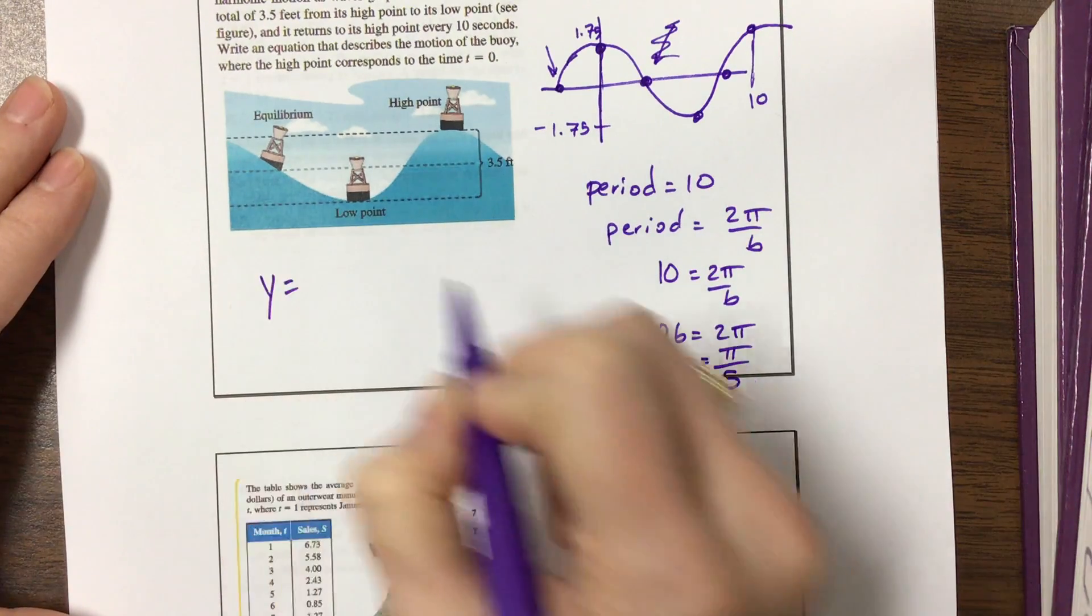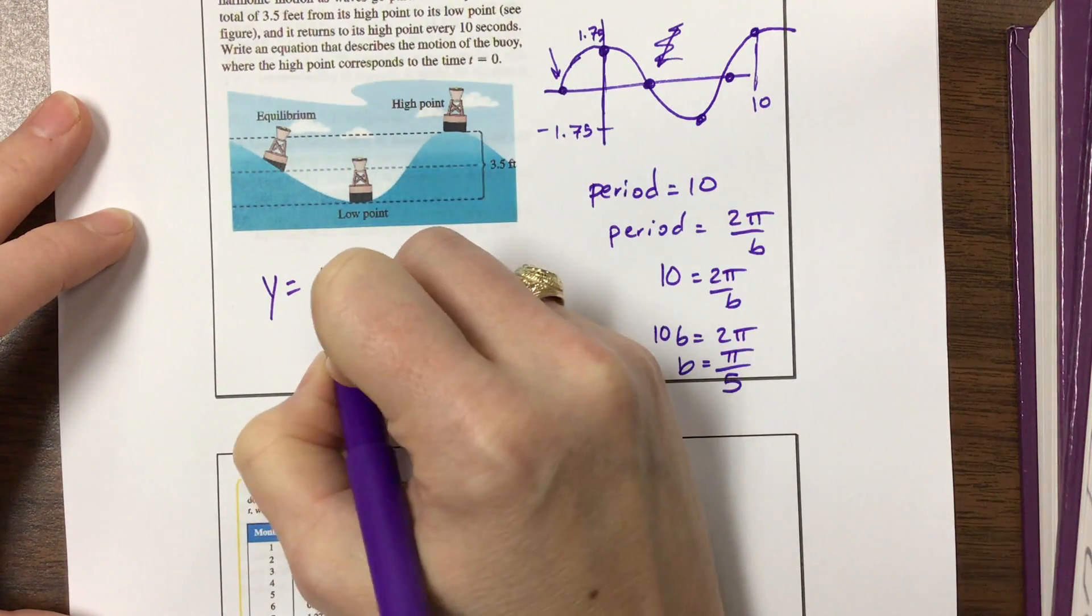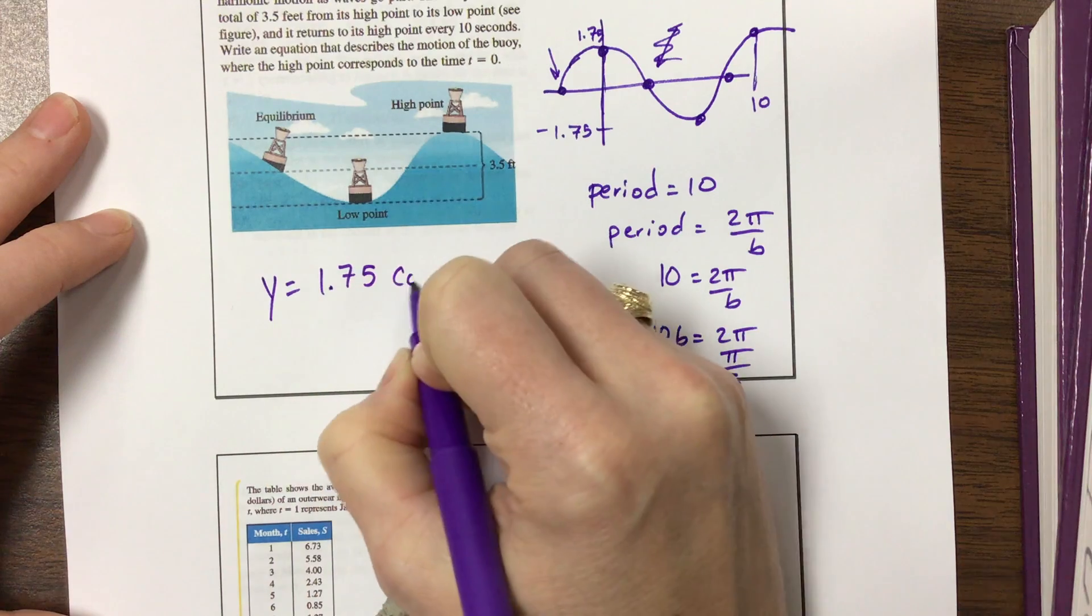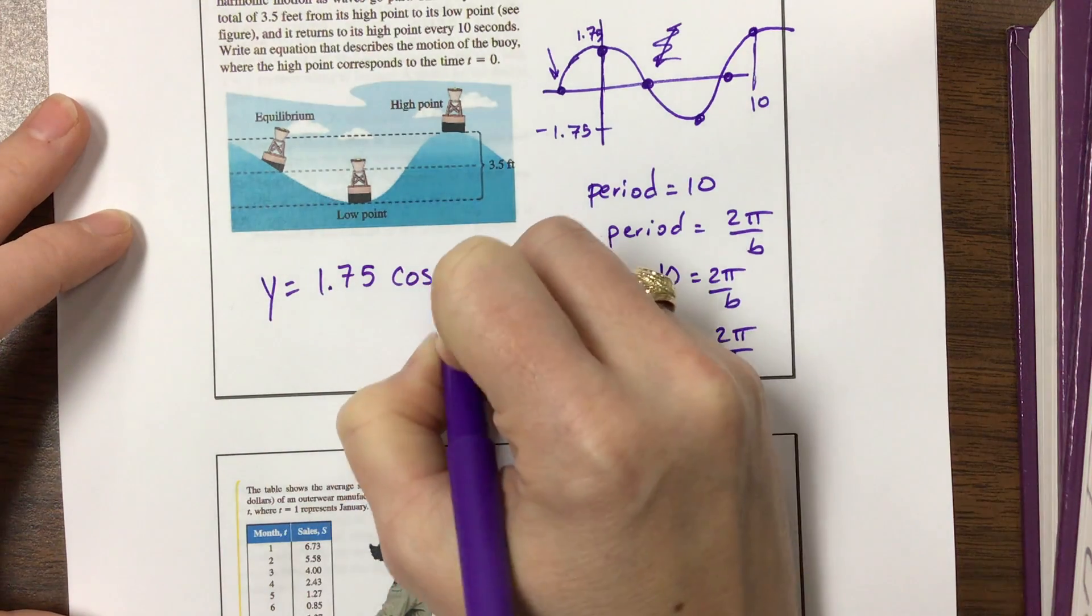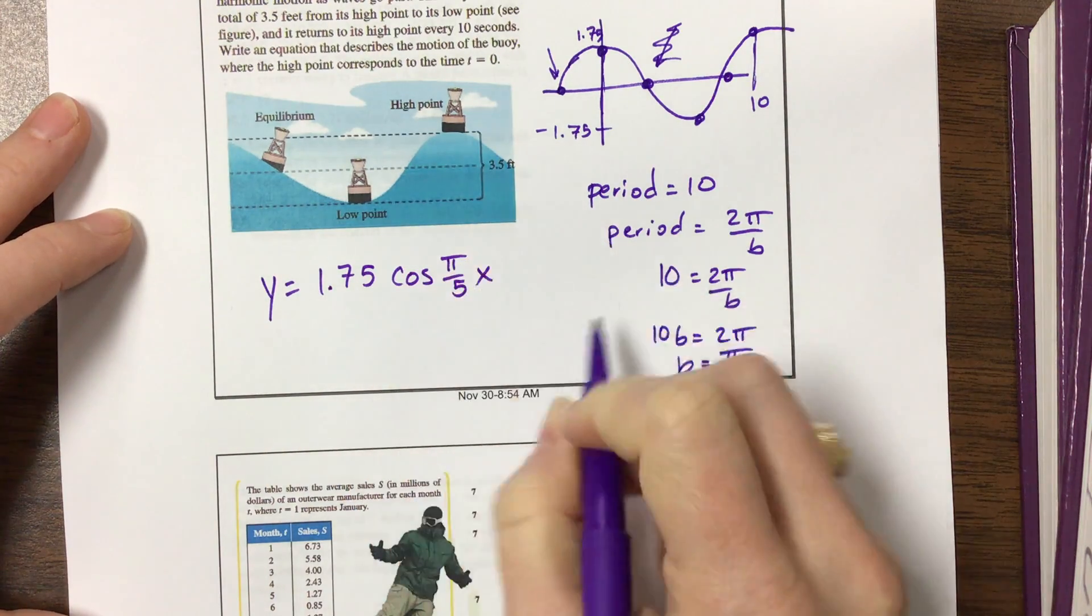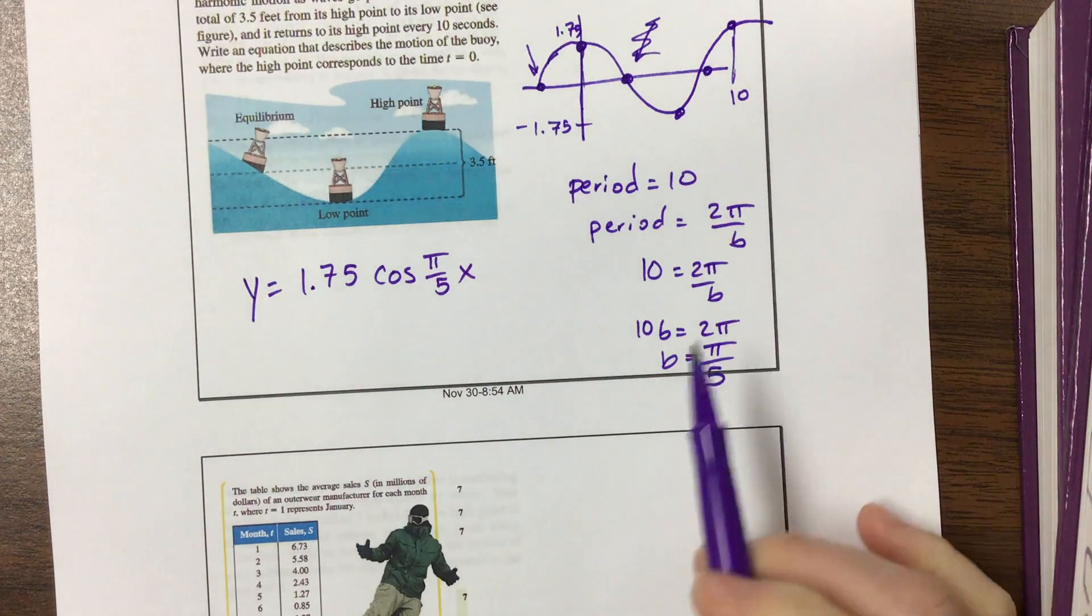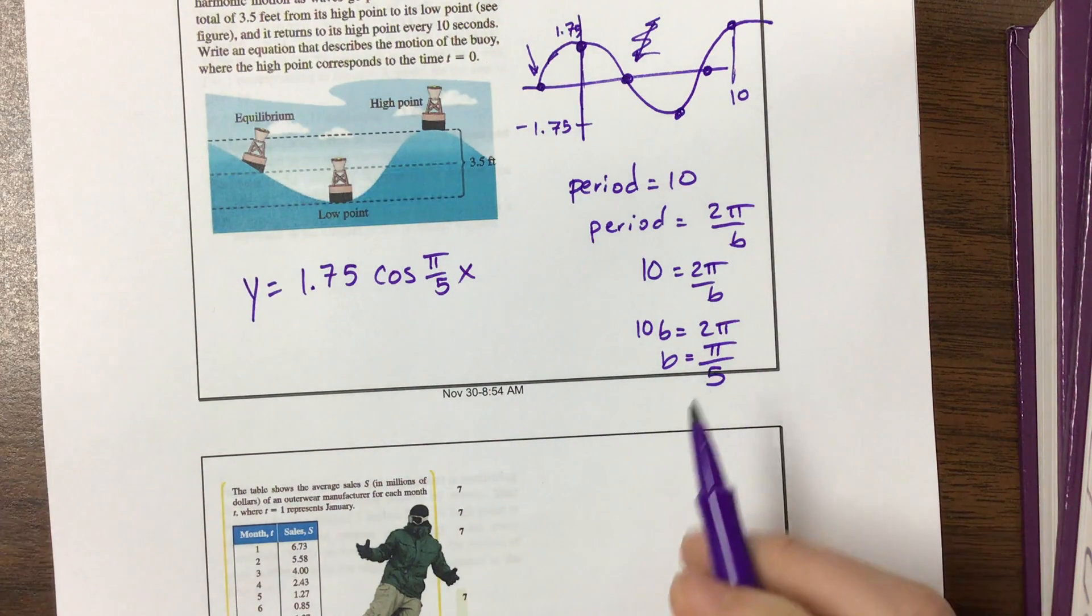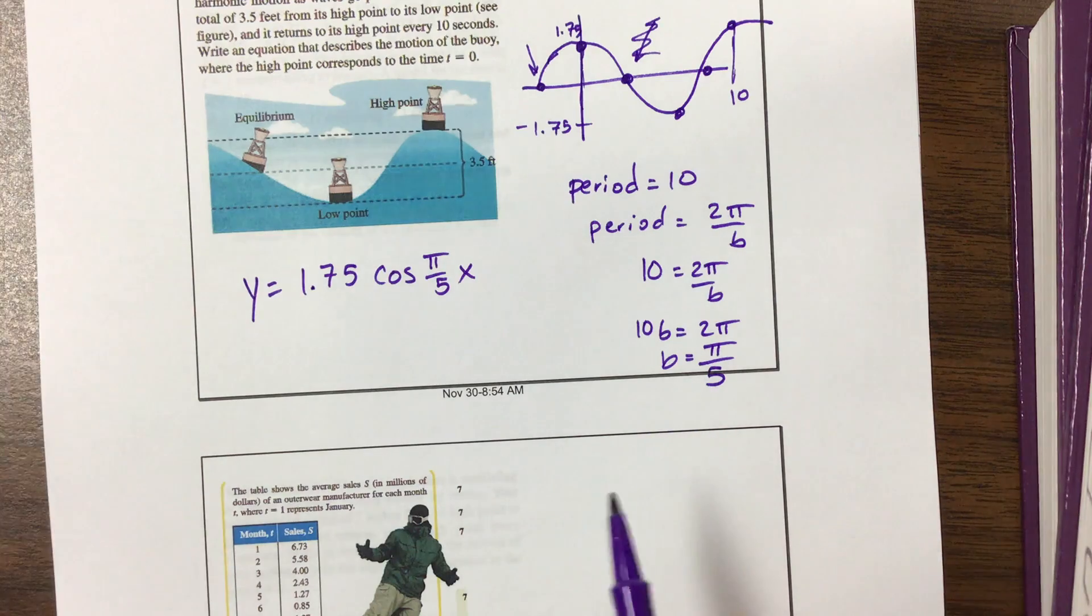So what I would say here is that the amplitude is now going to be 1.75. We did a cosine graph that has a period of π over 5 times x, and I didn't shift it left, right, up, or down, and I'm done. So once again, not the only correct answer, but it works.